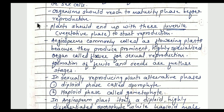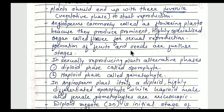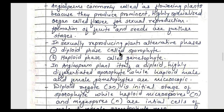Angiosperms are called higher plants and are commonly called flowering plants because they produce a prominent, highly specialized organ called the flower for sexual reproduction. After the formation of the flower, fruits and seeds are formed. So in sexually reproducing plants, two phases are very important.